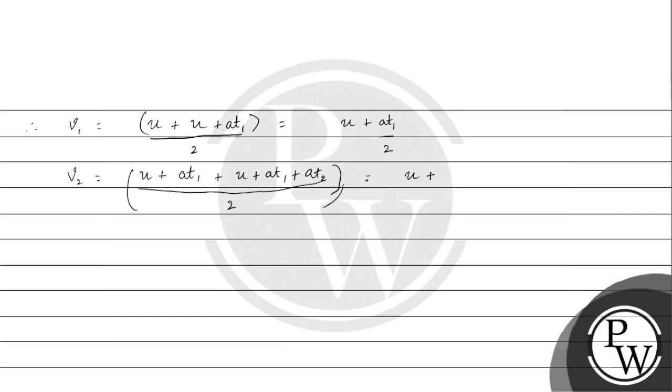Similarly, v2 will be u plus a t1 plus u plus a t1 plus a t2, the whole thing divided by 2, which simplifies to u plus a t1 plus a t2 by 2. And v3 will be u plus a t1 plus a t2 plus a t3 by 2.